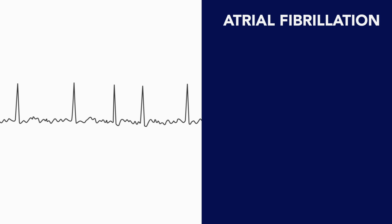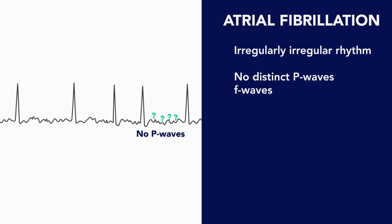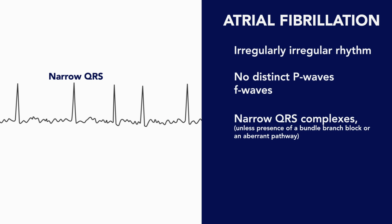So in summary, in atrial fibrillation, look for an irregularly irregular rhythm, no distinct P waves and sometimes fibrillatory waves, and narrow QRS complexes unless there is an underlying bundle branch block or an aberrant pathway. We'll see you next time.